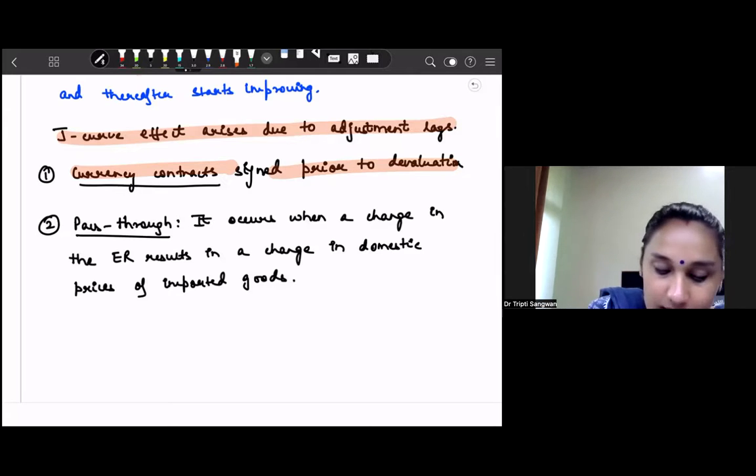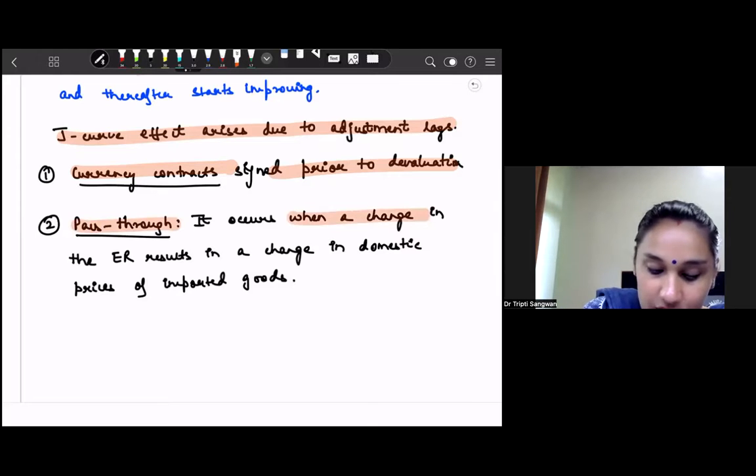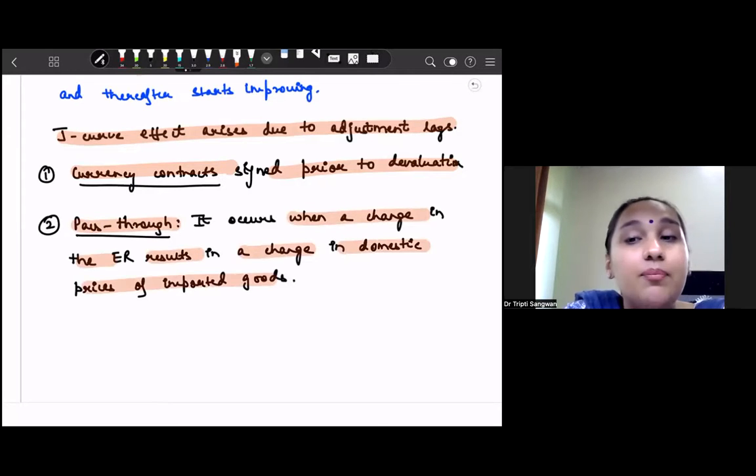Second reason for this J-curve, or we can say for the delayed improvement in the trade balance, is pass-through. Pass-through occurs when a change in the exchange rate results in a change in the domestic prices of the imported goods. Naturally, when your exchange rate changes, then there are certain changes in the domestic prices of import goods, which takes time to adjust.